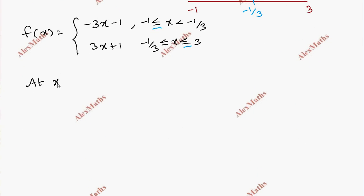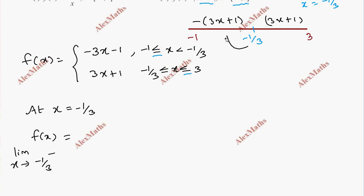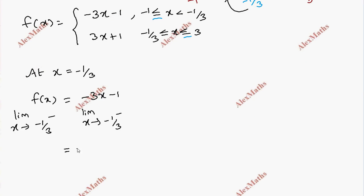We check continuity at x equal to minus 1 by 3. For the left-hand limit, x tending to minus 1 by 3 from the left, we choose the function minus 3x minus 1. Substituting: minus 3 times minus 1 by 3 minus 1 gives 1 minus 1 equals 0. So the left-hand limit is 0.